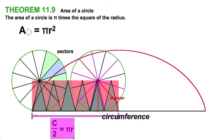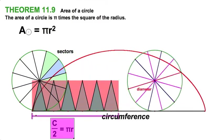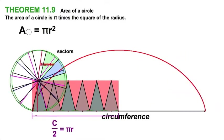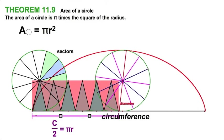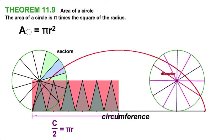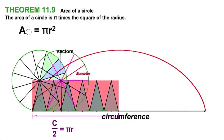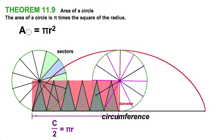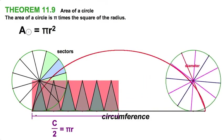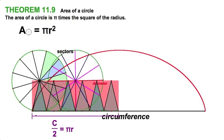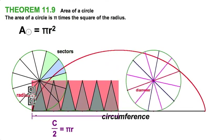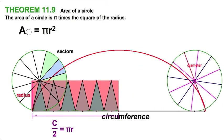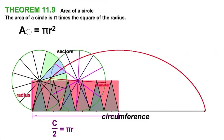So this rectangle, you'll notice, does not have a length or a base equal to the circumference. It's half the length. It's circumference divided by 2. Circumference is 2πr. Therefore, this distance would be πr. And then we also know that the height of the rectangle is equal to the radius of our rolling circle.